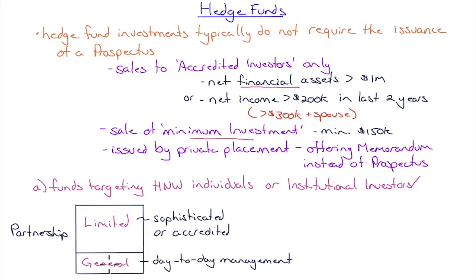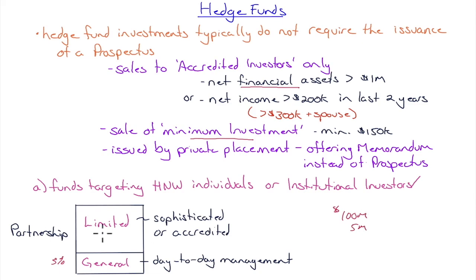Typically the general partner will have five percent of the value of the fund invested from their own money. Mutual fund managers don't put their own money into the mutual fund, but hedge fund managers are expected to put their money on the line. So if it's a $100 million fund, the general partners put up $5 million of their own money and raise $95 million from the limited partners. For a billion dollar fund, they need to put up $50 million of their own money.